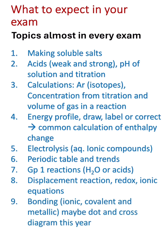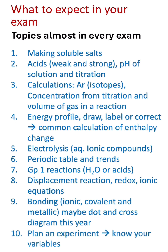Bonding — ionic, covalent, and metallic — is very common in the exam; I have never seen an exam without a bonding question. Last year and the year before they asked about metals, properties of metals, and alloys. So this year they may focus more on covalent compounds, especially giant covalent structures, and also ionic bonding. The dot and cross diagram was not in last year's exam, so they may ask you to draw one for an ionic or covalent compound this year.